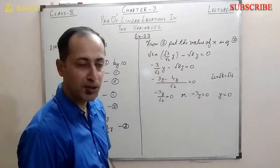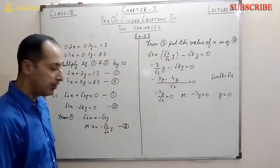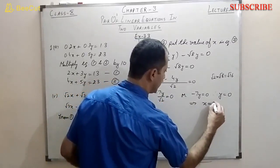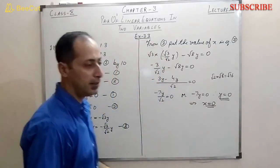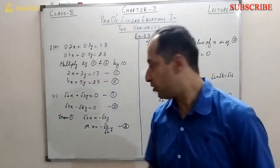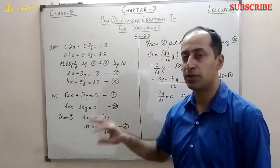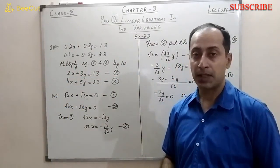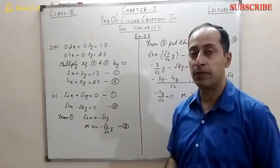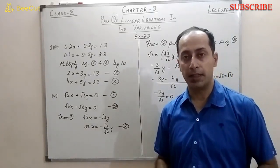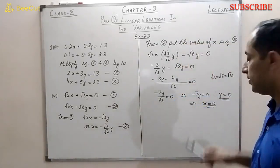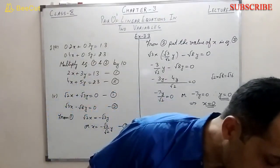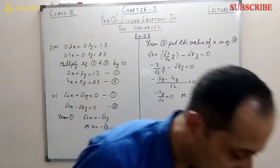Substituting y equals 0 back gives x equals 0. So the solution is x equals 0 and y equals 0. This is the trick: if any pair of linear equations has constant terms equal to 0, then x and y will both always equal 0. Now let's go to the last part of this question.